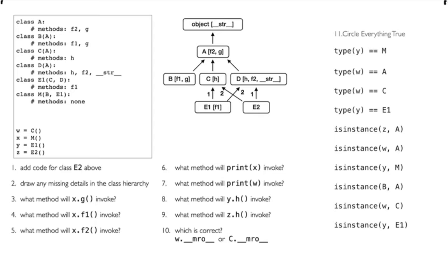What I've done here is I have a little code snippet on the left. I have some classes, and then I'm drawing those classes over here on the right, so the picture corresponds to the code. Just to keep it simple so we can focus on the pure logic, I don't actually show the methods — I just say what they are. The A class has an F2 method and a G method, shown over here. And remember that all classes, if they don't explicitly inherit from something, inherit from the object type.